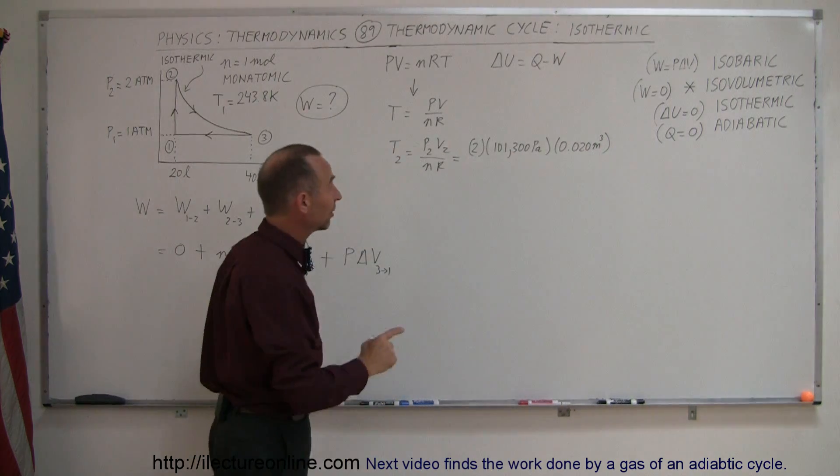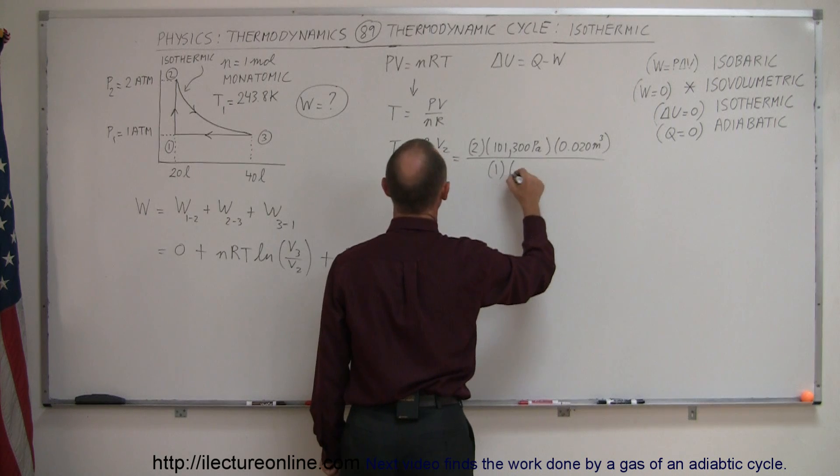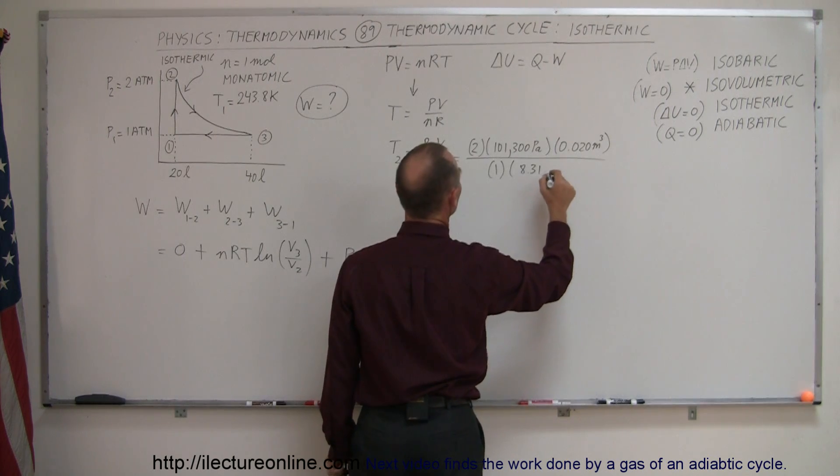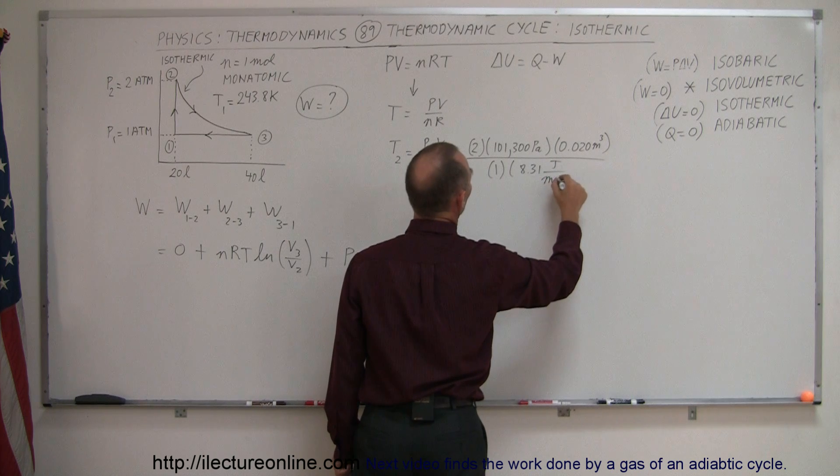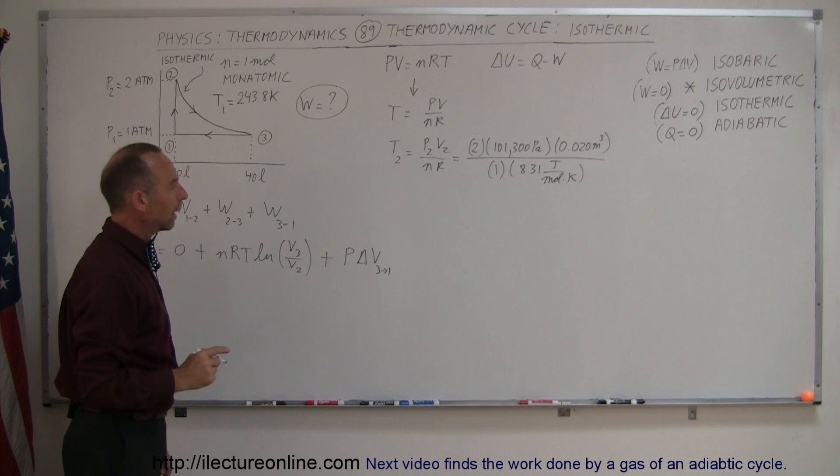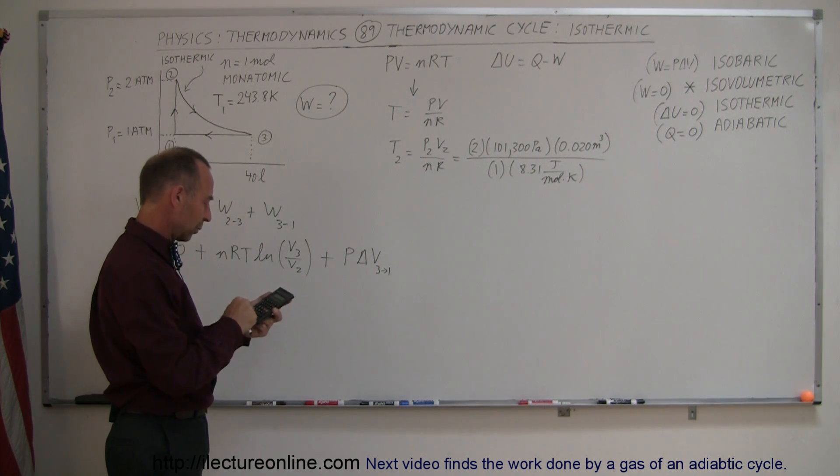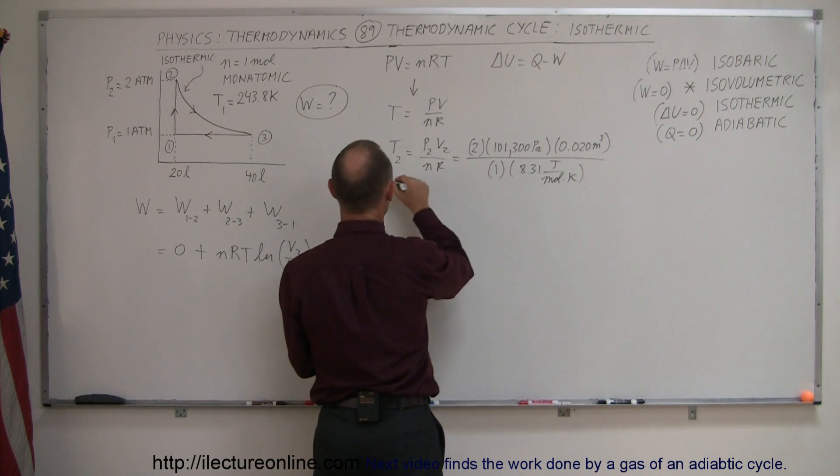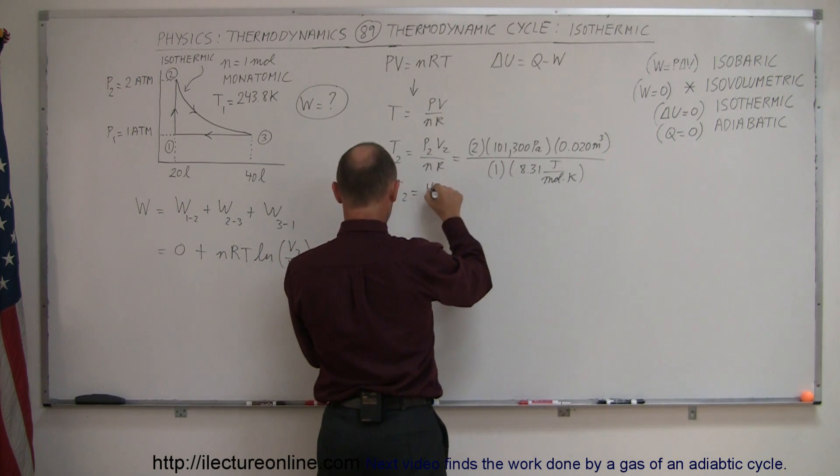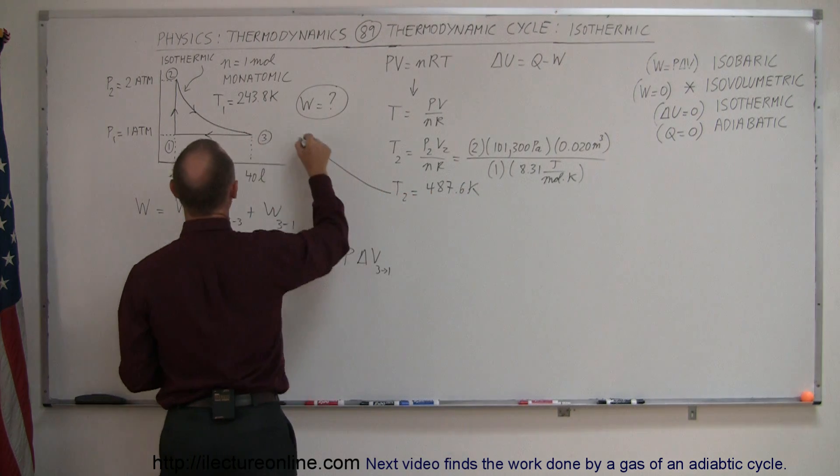Because there's a thousand liters in a cubic meter, that's the conversion to cubic meters. There's one mole of the gas, and r is 8.31 joules per mole times kelvin. Now I need a calculator to find out what that is equal to, so we have two times 101,300 times 0.02 divided by 8.31 equals, and that would be 487.6 kelvin, so that would be the temperature of our thermodynamic cycle.